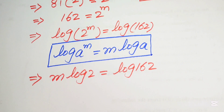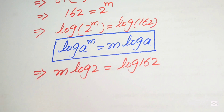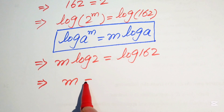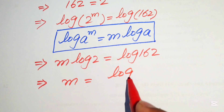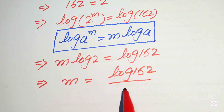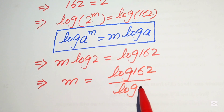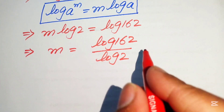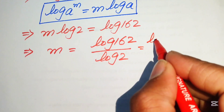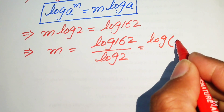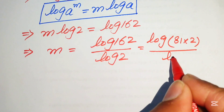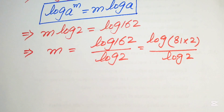Moving log(2) to the right-hand side, we get m equals log(162) divided by log(2). We need more simplification, so we write 162 as 81 times 2, giving us m equals log(81 times 2) divided by log(2).